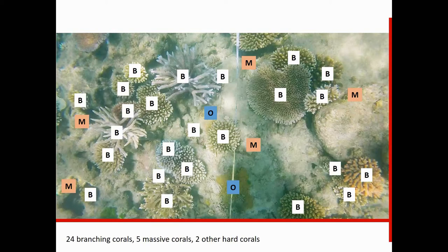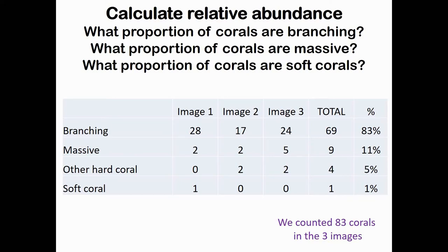Now let's tally up all of these numbers to work out the relative abundance of the different coral types at our site. In total we counted 83 corals across these three images, and 69 of those — or 83 percent — were branching. So most of the corals in this area of reef have a branching shape, while mound-shaped, other hard corals, and soft corals have a lower relative abundance — fewer of them as a proportion of the total coral community.